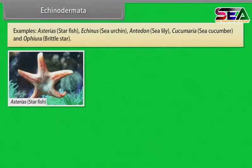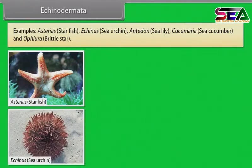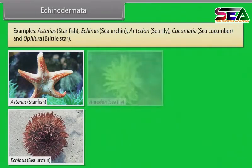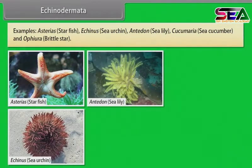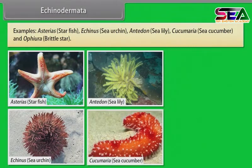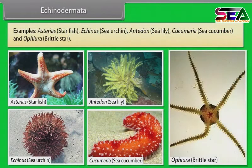Examples: Asterias (starfish), Echinus (sea urchin), Antedon (sea lily), Cucumaria (sea cucumber), and Ophiura (brittle star).